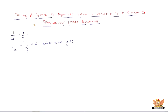In this video, let us look into solving a system of equations which is reducible to a system of simultaneous linear equations. The system of equations we are talking about is: equation 1 is 1/(2x) minus 1/y equals minus 1, and equation 2 is 1/x plus 1/(2y) equals 8. These are simultaneous equations in the form of fractions, and we need to reduce them to a simpler linear form.